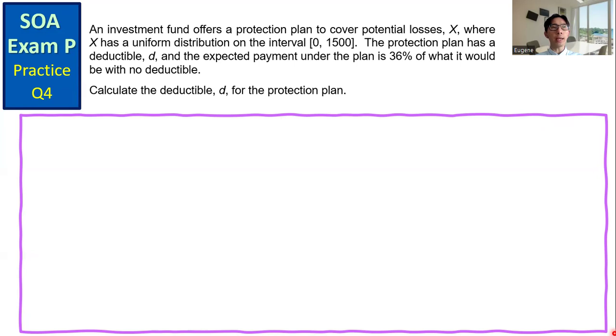The protection plan has a deductible d, and the expected payment under the plan is 36% of what it would be with no deductible. Calculate the deductible d for the protection plan.